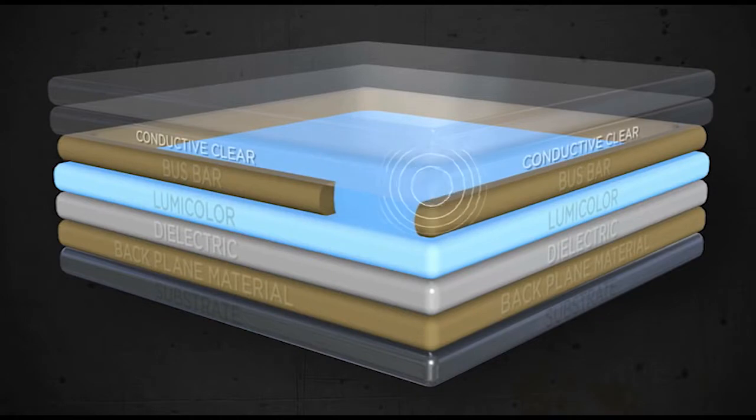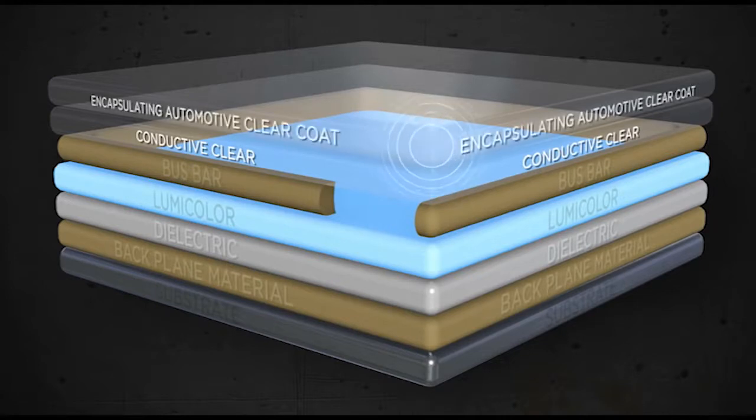The conductive clear layer is the final conductive element that once charged allows LumaLore to emit light. Top it all off with a coat of your favorite encapsulating automotive clear coat and you're in business.